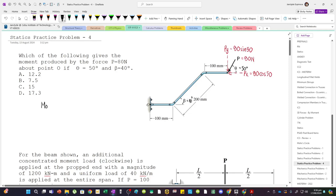And then the distances: 200 is the hypotenuse of this triangle. Horizontally this is 200 cosine 40, and vertically going to the force P, this is 200 sine 40.